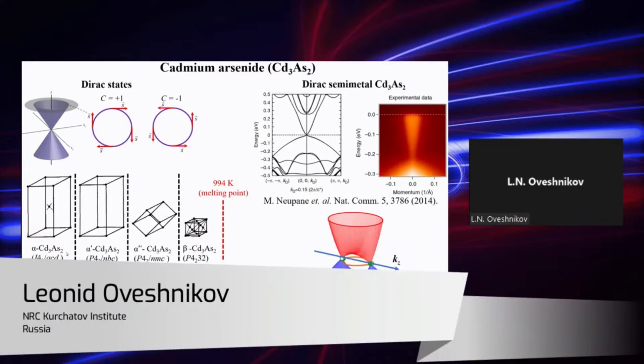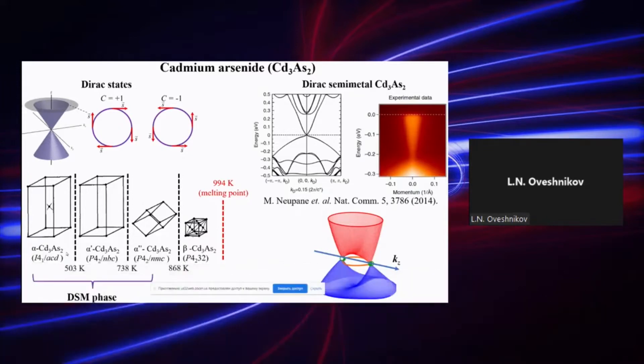In the case of cadmium arsenide, it was verified experimentally both by spectroscopic techniques, which are presented on this slide. Basically, the ARPES measurements show the presence of the bulk Dirac cone in cadmium arsenide, and also several works on magnetic transport measurements revealed the presence of the quantized Berry phase detected as the anomalous shift of the Shubnikov-de Haas oscillation phase, which also confirmed that cadmium arsenide hosts the Dirac semimetal phase.